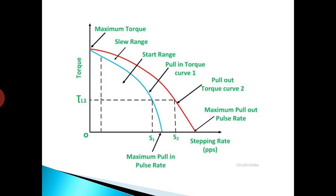The pulse rate from S1 to S2 is known as the slew rate for the stepper motor for this particular load torque TL. The region between the two torque curves — the pull-out torque and the pull-in torque — is known as the slew range.